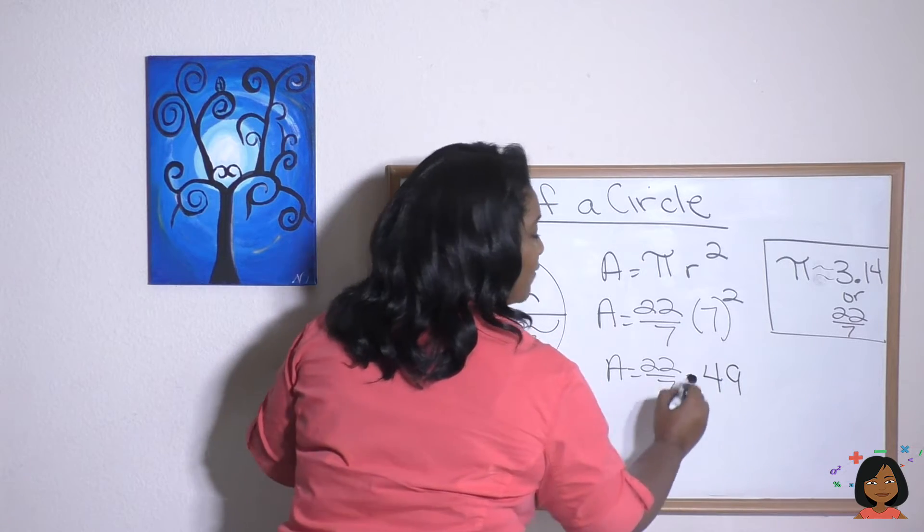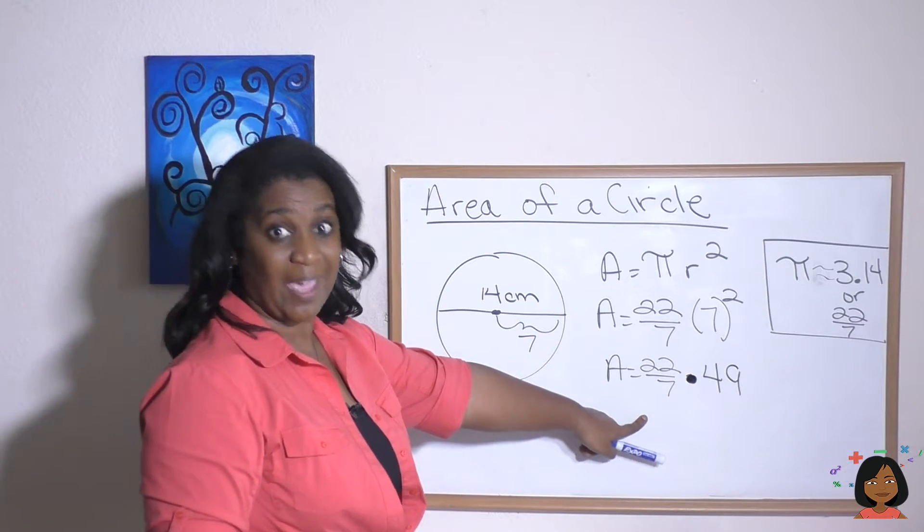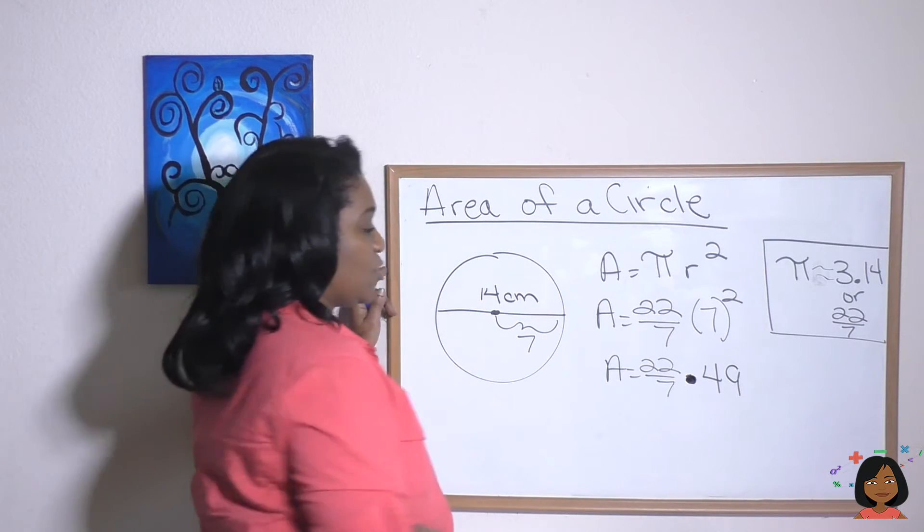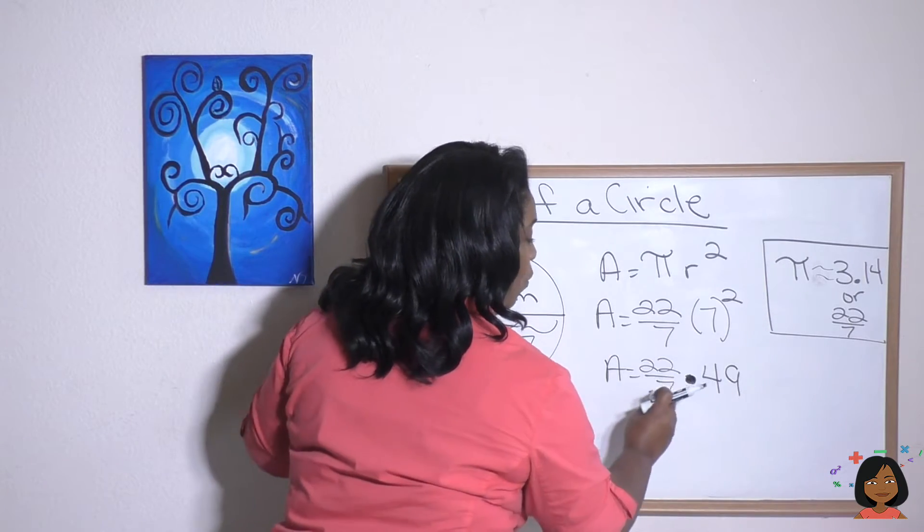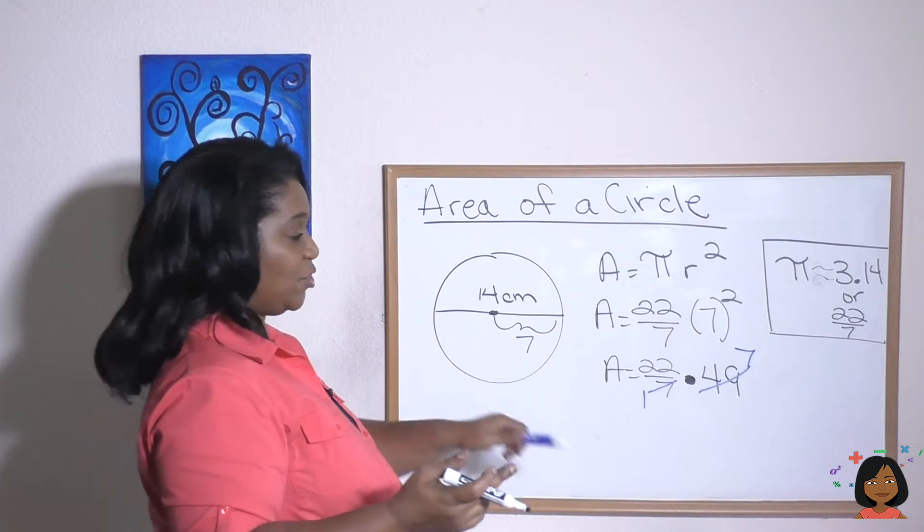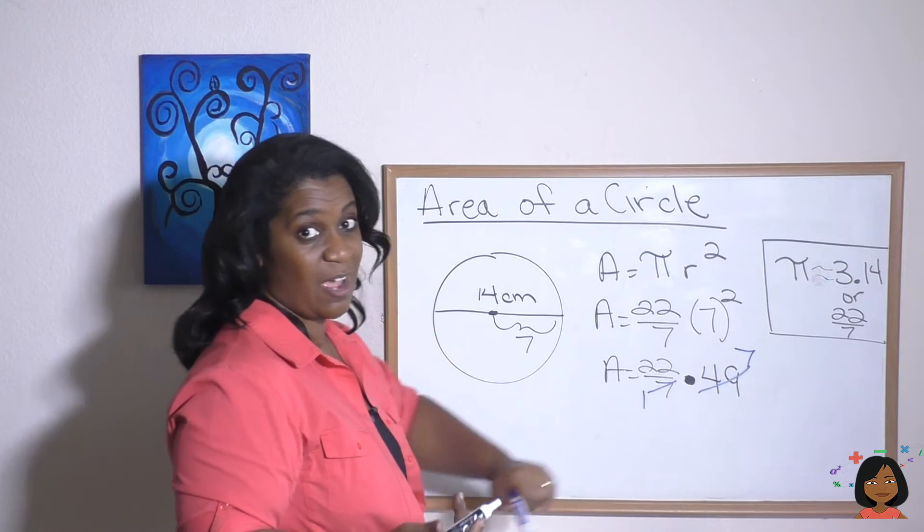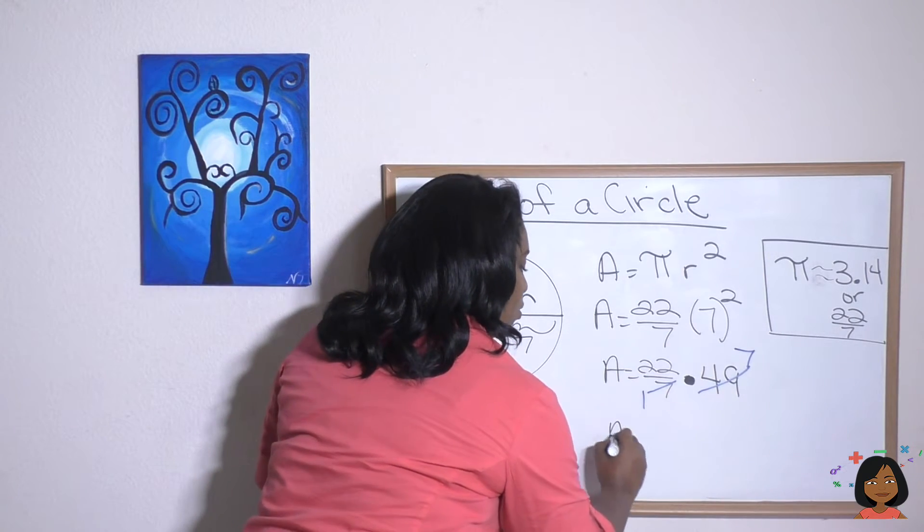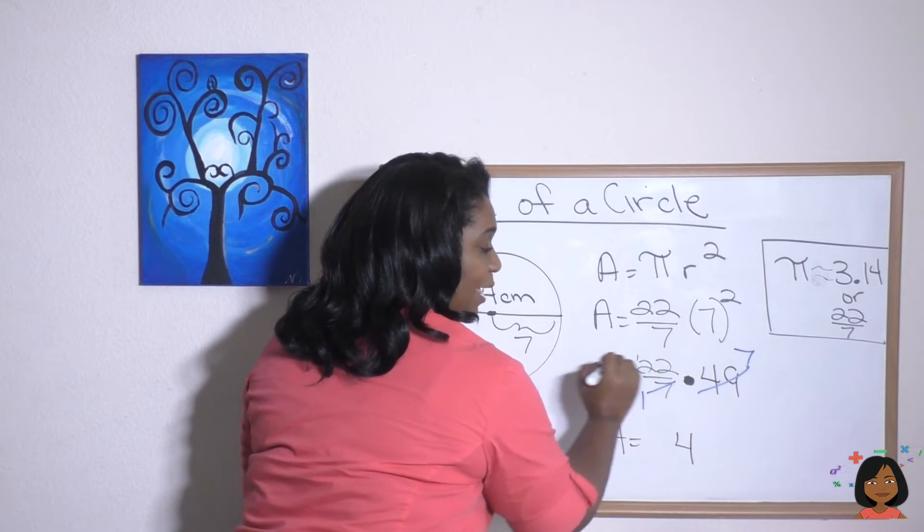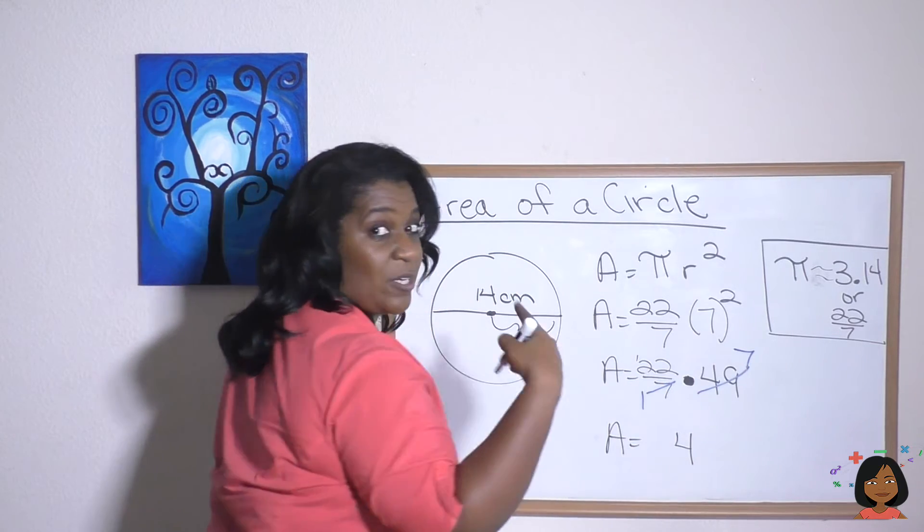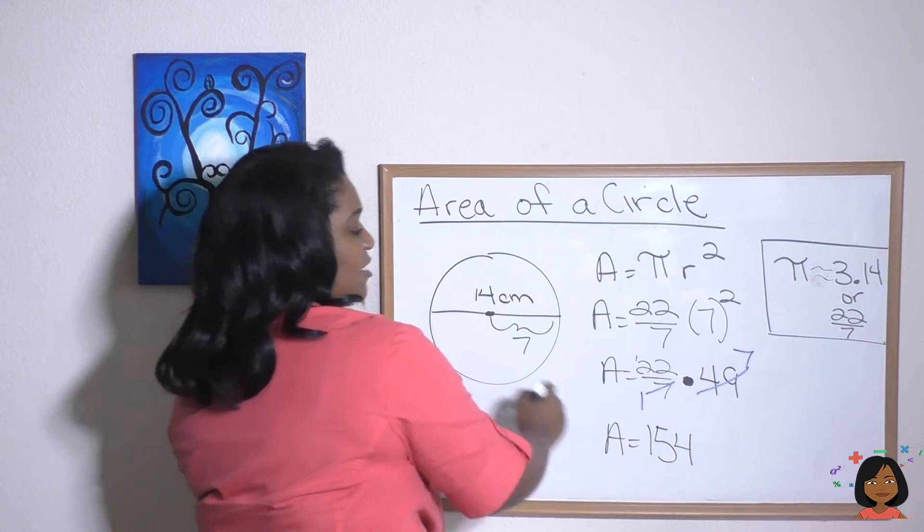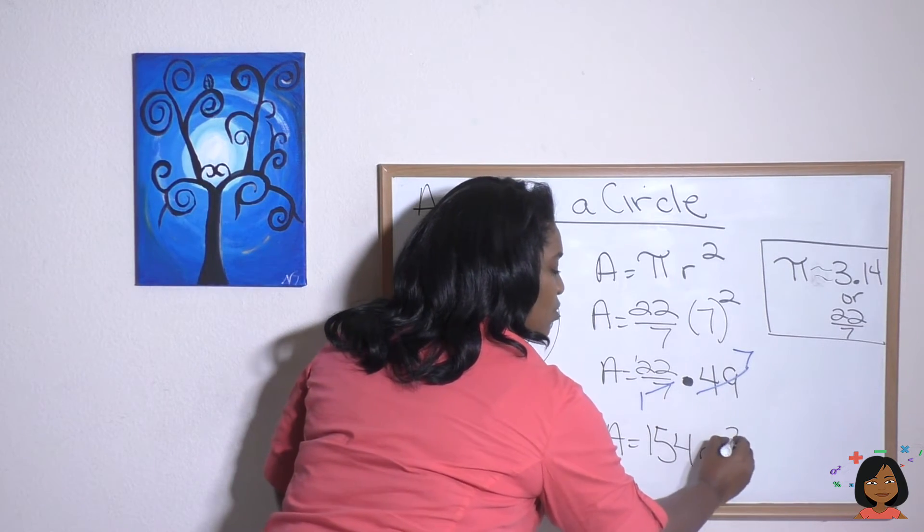And now to make life easy, we can do some canceling before we multiply. Seven goes into seven one time. Seven goes into 49 seven times. Now all we have to do is multiply 22 times seven. Seven times two is 14. We're going to carry that one. Seven times two is 14 plus one more is 15. 154 centimeters squared. That's our answer.